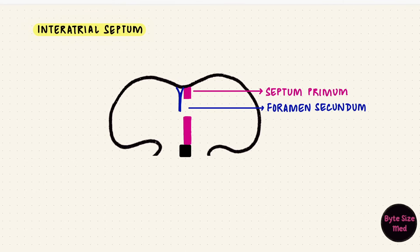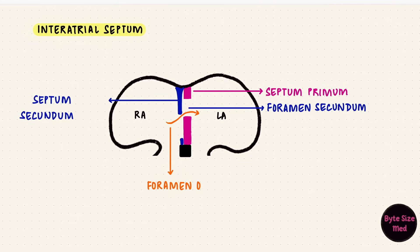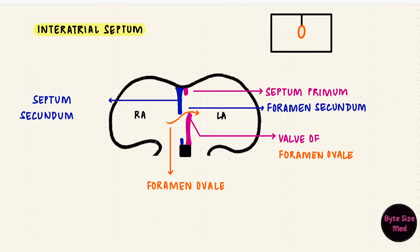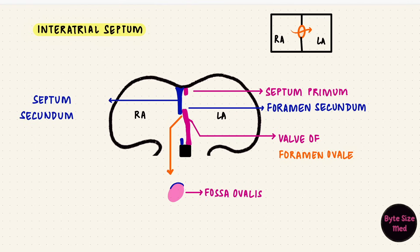Another growth forms from the roof of the atrium, called the septum secundum. This doesn't grow as much as the septum primum. It extends towards the atrioventricular canal and overlaps the foramen secundum, so now there's an oblique passage between the right atrium and the left, called the foramen ovale. The septum primum becomes the valve of the foramen ovale. This is one of the shunts that remains in fetal circulation — blood from the right atrium gets shunted to the left atrium. After birth, when the left atrial pressure becomes higher than the right, the valve — the septum primum — moves back and closes the foramen ovale. What remains is an oval depression formed by the septum primum, called the fossa ovalis. The septum secundum forms the elevated ridge around it, called the limbus of the fossa ovalis.